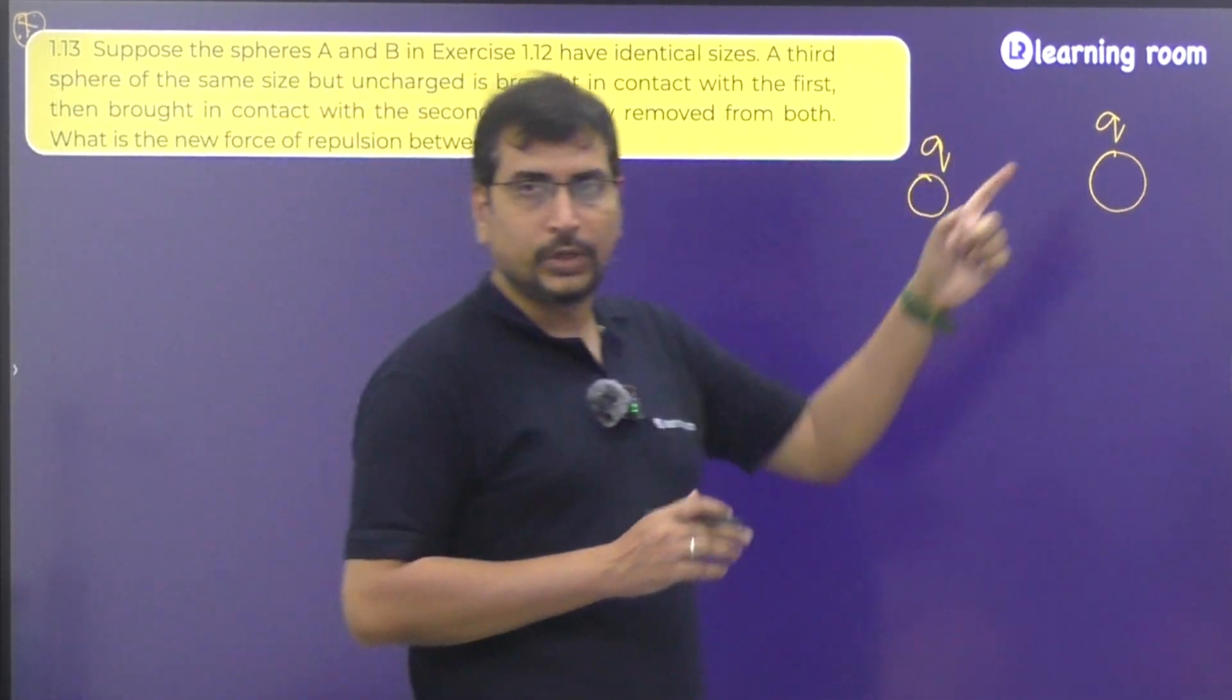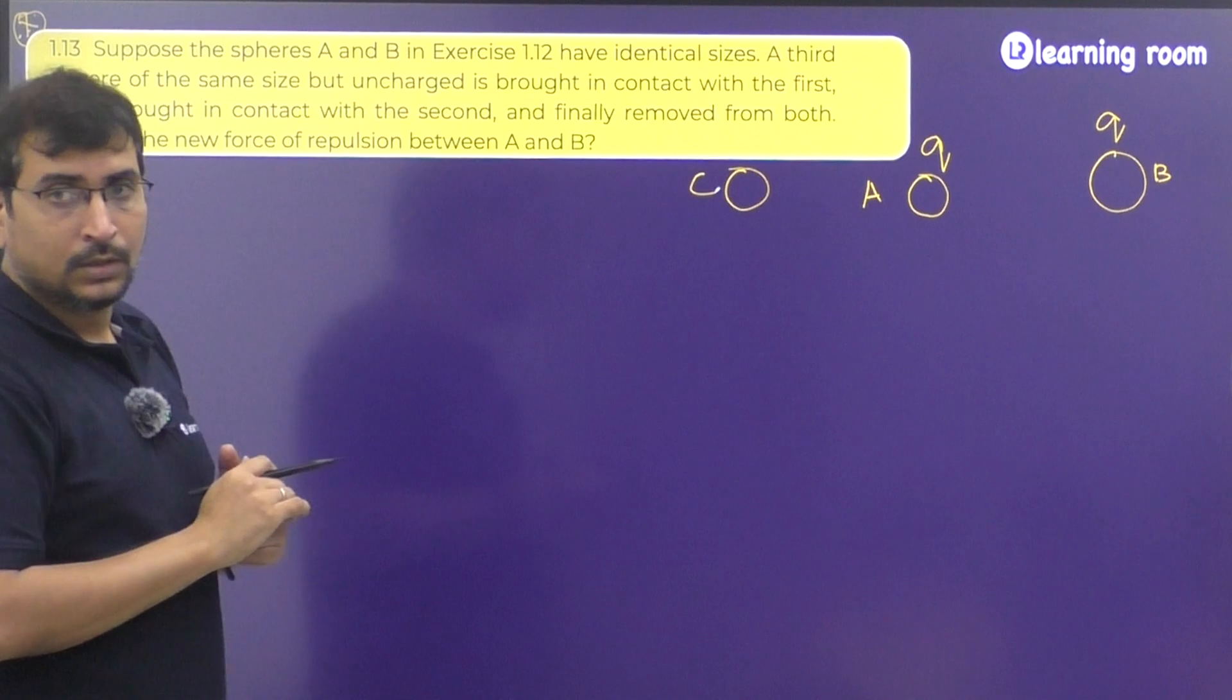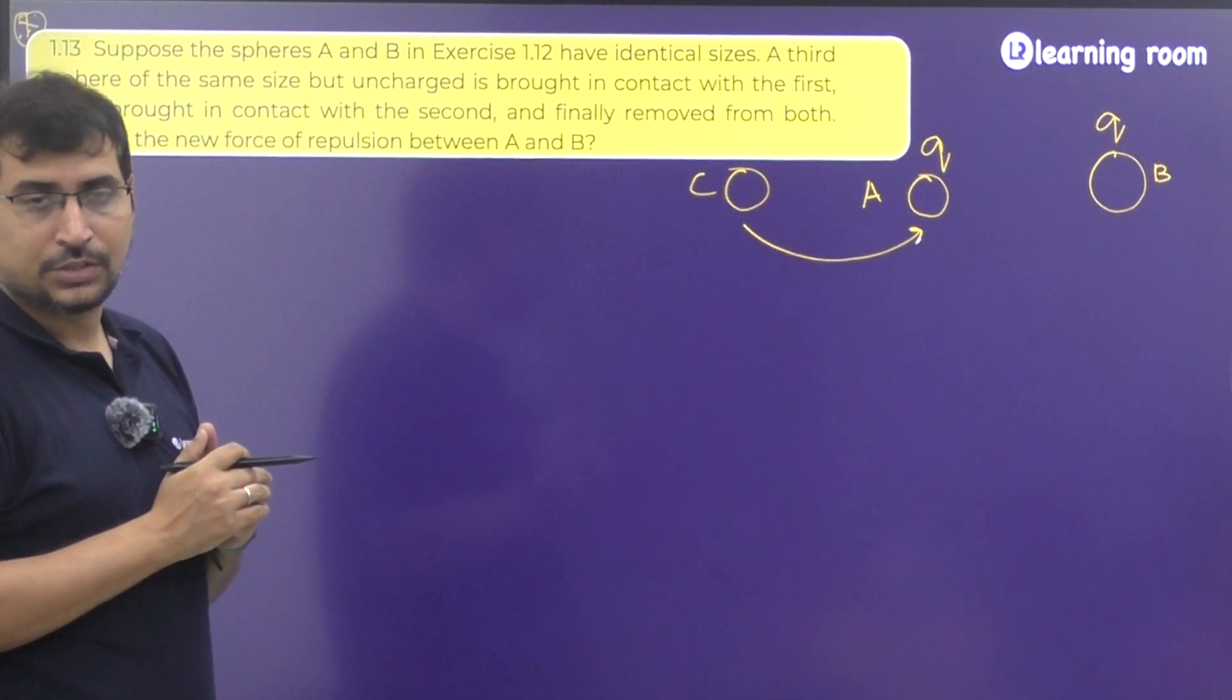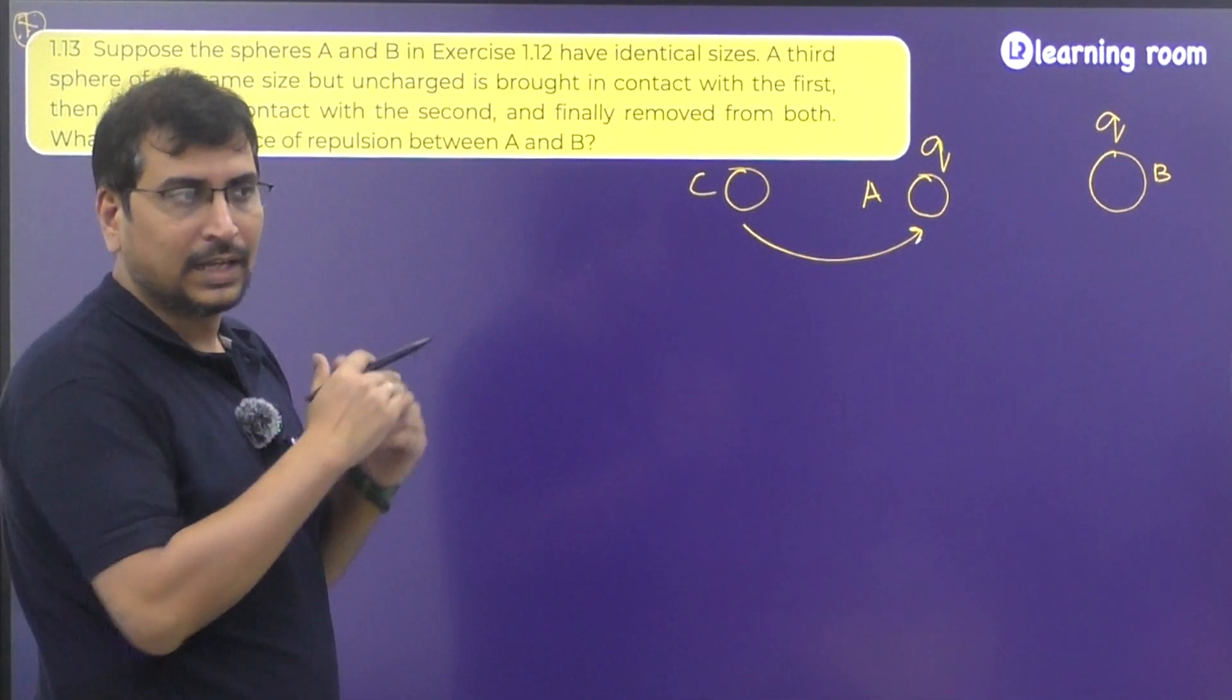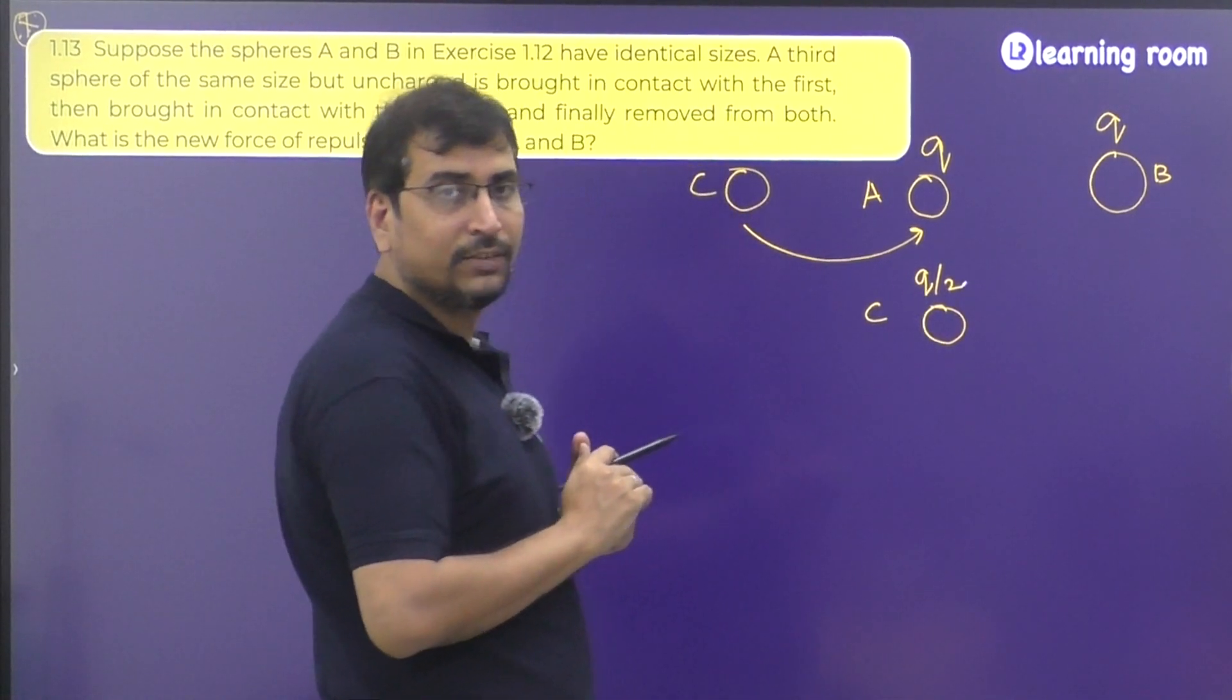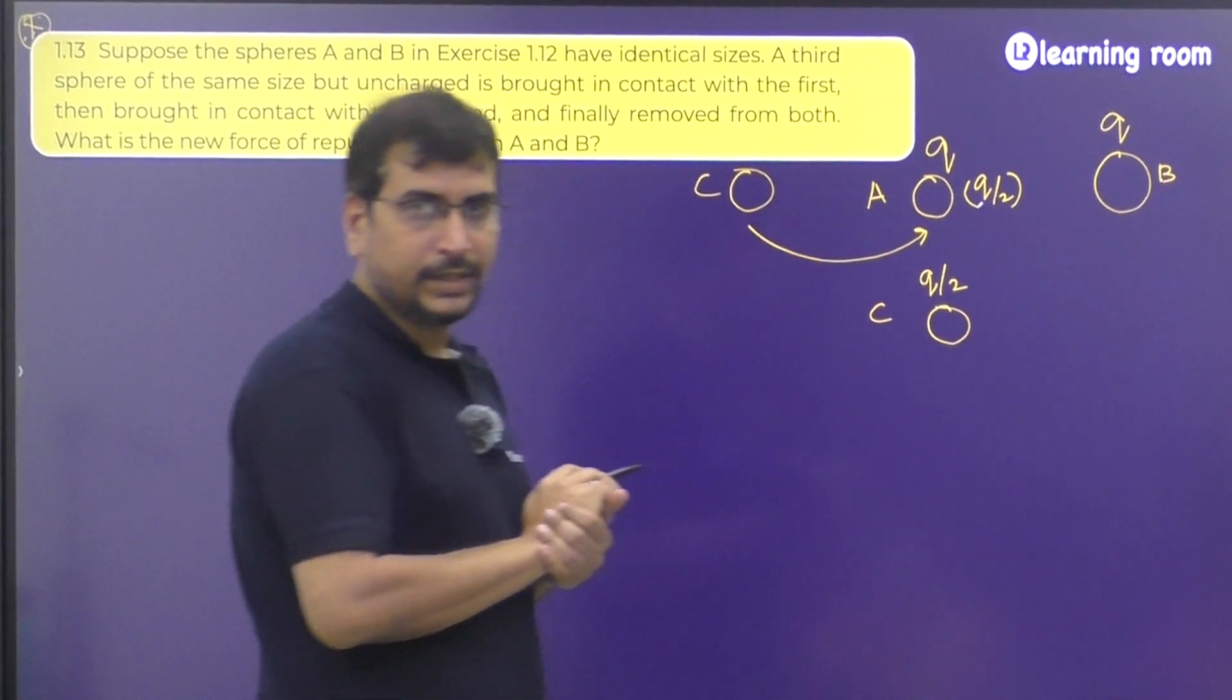Now listen to this question. There are charges Q and Q which is considered to be A and B. Now there is a third particle which is uncharged. So if C is brought in contact with A and then moved, then the charge will get transferred in such a way that the sum of both the charges is what you need to do divided with 2, that is the average of these two charges. Now C has got how much charge? Q by 2. Now what is A left out with? A is left out with Q by 2.